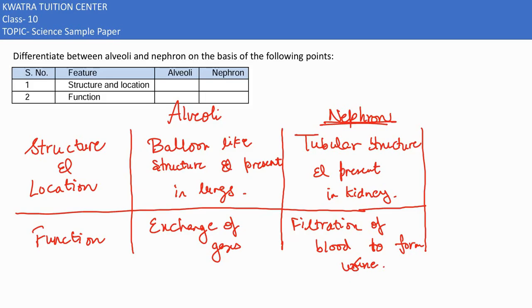So that is how you would be writing the difference between alveoli and nephron on the basis of the following points, which means we have mentioned structure and location and function.